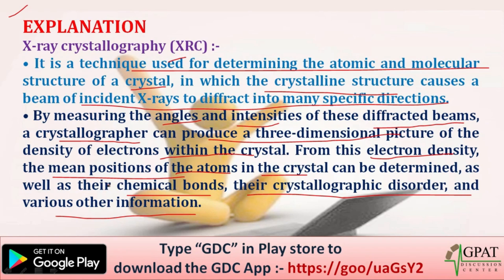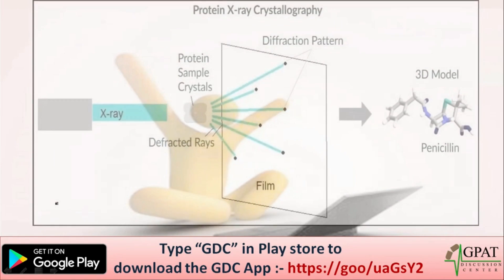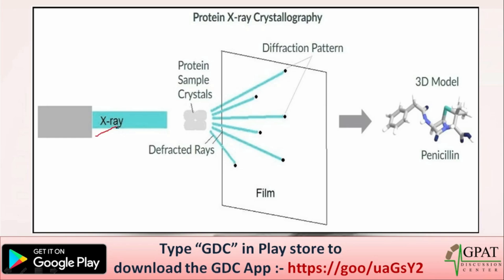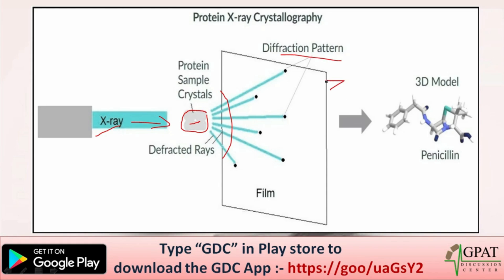In the X-ray crystallography diagram: X-rays from a source pass through a protein crystal sample, producing a diffraction pattern. The crystallographer analyzes this diffraction pattern to construct a 3D model of the molecular structure.